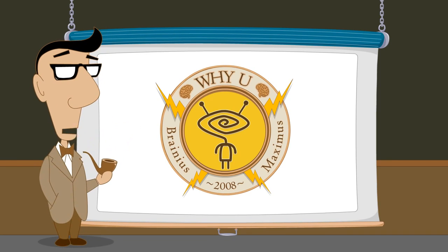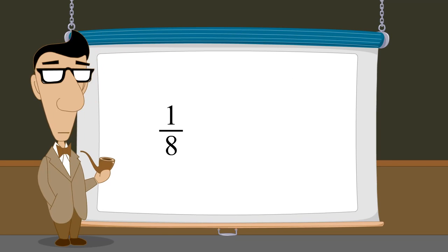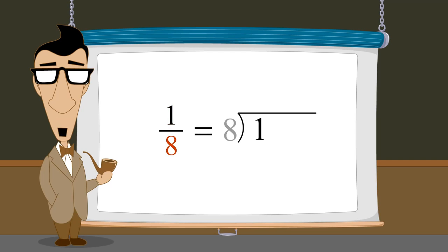In the last lecture, we saw that any fraction can be converted to a decimal number by simply dividing the numerator by the denominator.